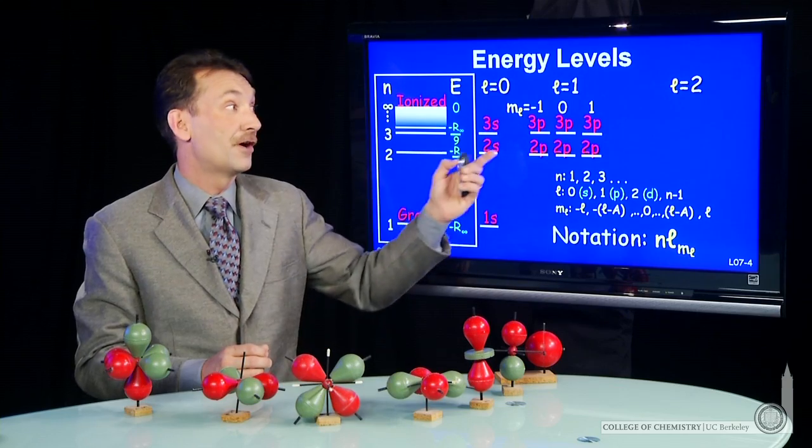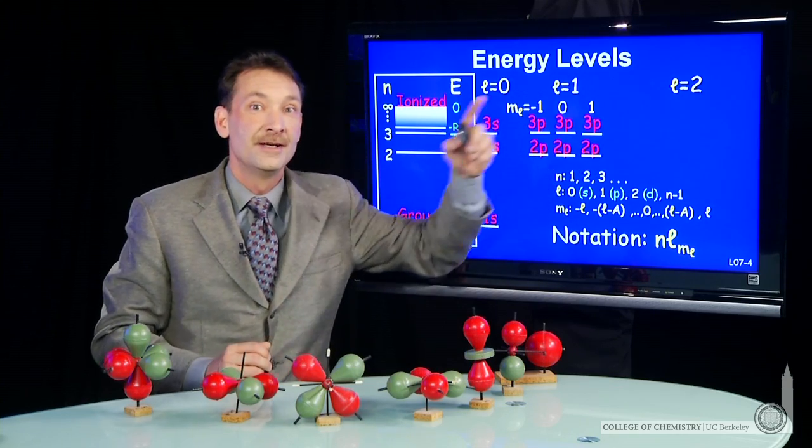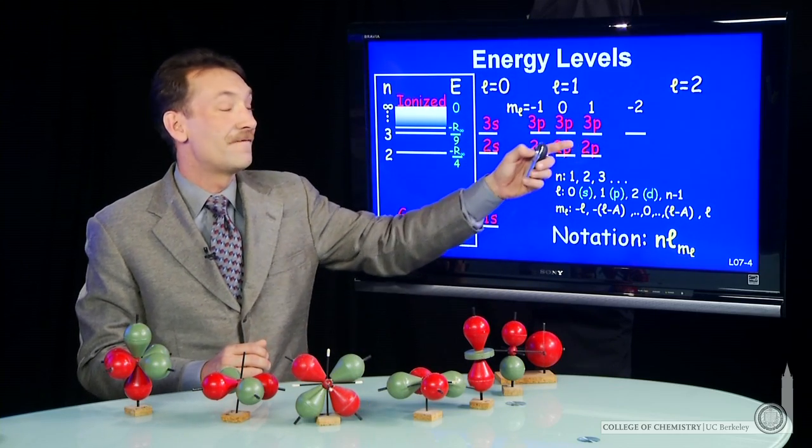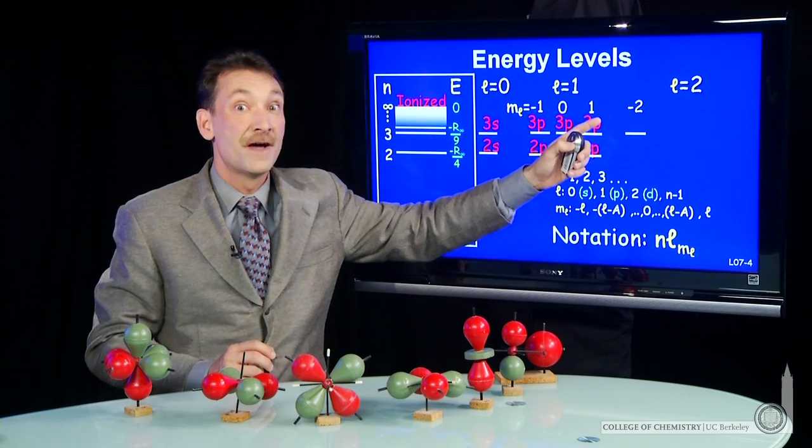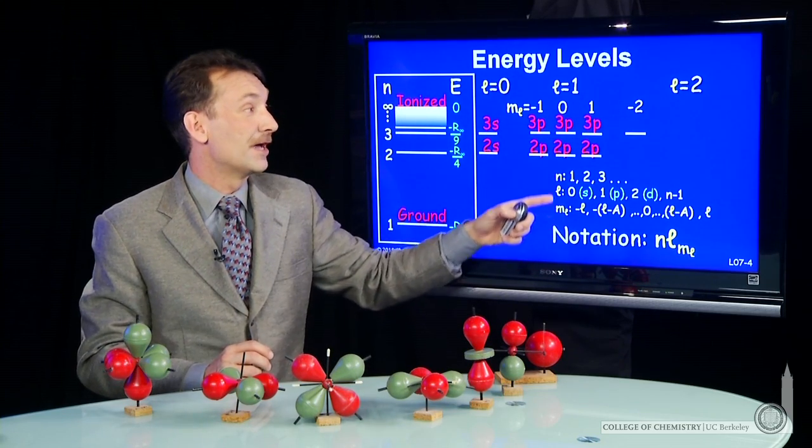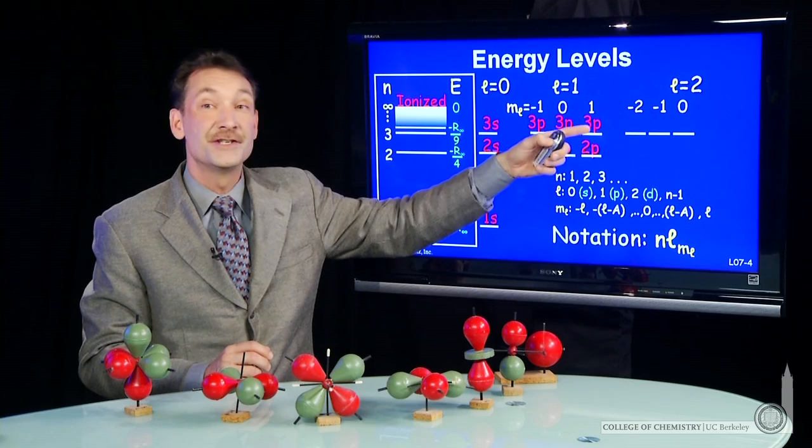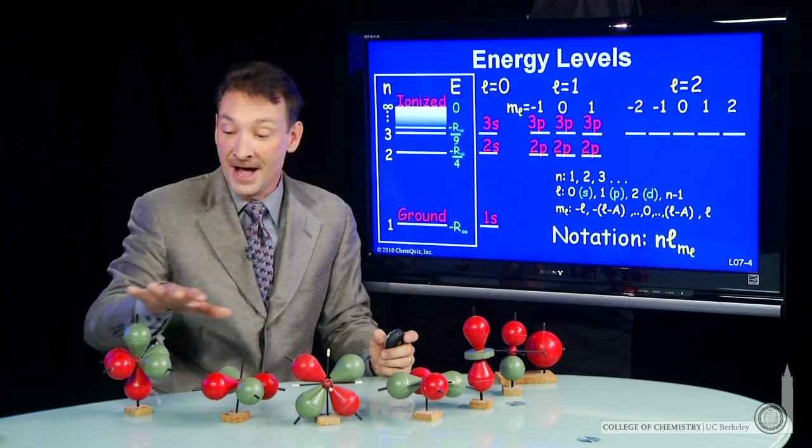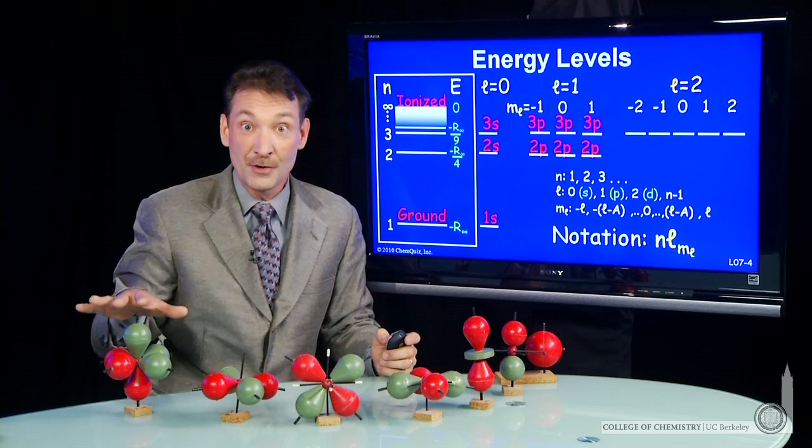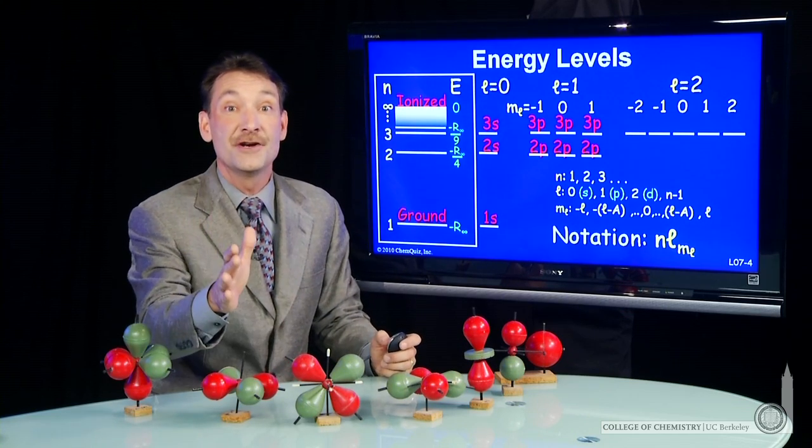But when n equals 3, you can also have l equal 2. So now you'll have a set of 5 d orbitals. Because when l is 2, there's five possible values of m sub l: minus 2, minus 1, 0, 1, and 2. That gives rise to a set of 5 different shape and orientation, but equal in energy orbitals.